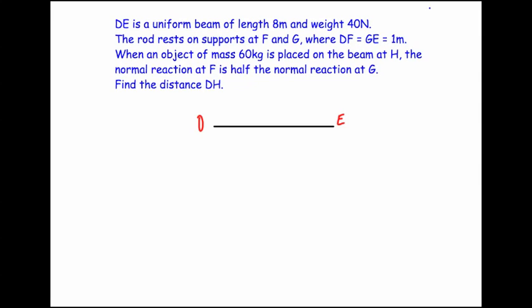This question says: DE is a uniform beam of length 8 meters and it's got a weight of 40 newtons. The rod rests on supports at F and G, where D to F and G to E are 1 meter long. When an object of mass 60 kilograms is placed on the beam at H, the normal reaction at F is half the normal reaction at G. Find the distance to H.